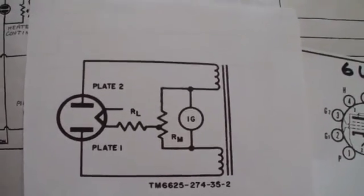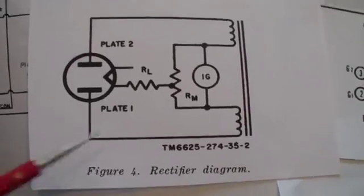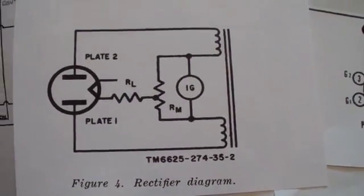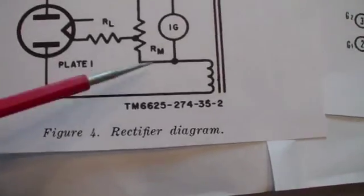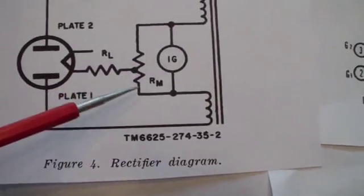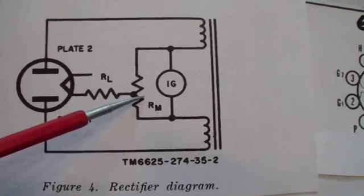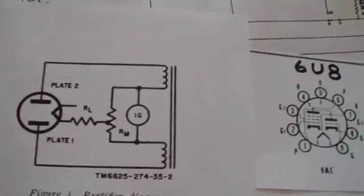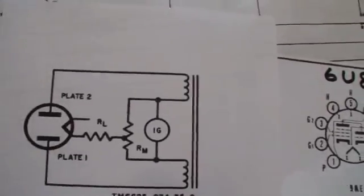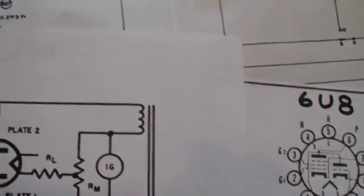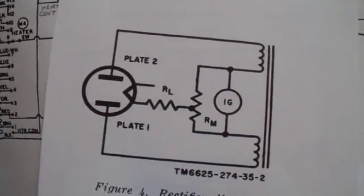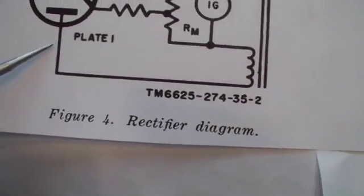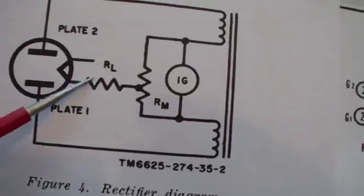They introduce it this way. They say, suppose that you have a rectifier and you have a load resistor in the cathode of the rectifier. Then over here you have a resistor that's divided in half with the tap tied to the other end of the load resistor.